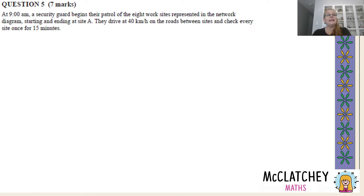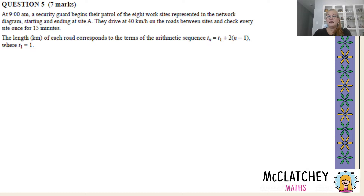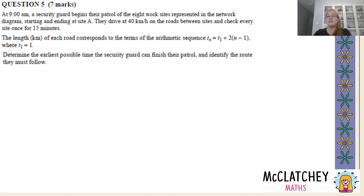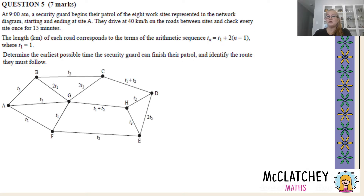Let's get into Question Five — it's worth seven marks, so this is a heavy question. At 9am, a security guard begins their patrol of the eight work sites represented in the network diagram, starting and ending at site A. They drive at 40 kilometres an hour on the roads between sites and check every site once for 15 minutes.